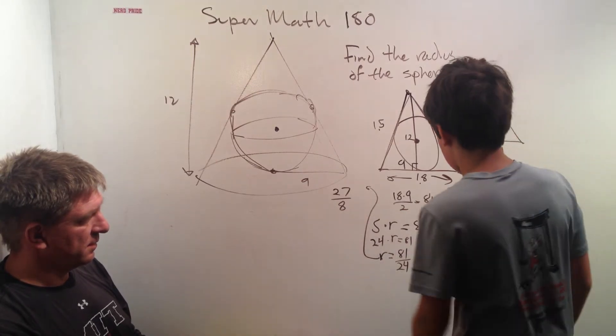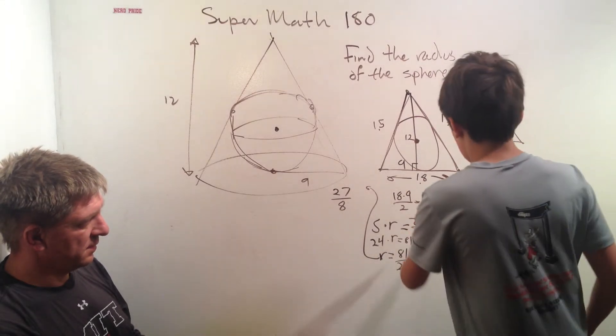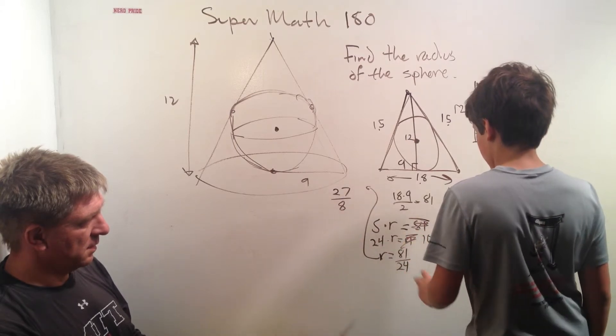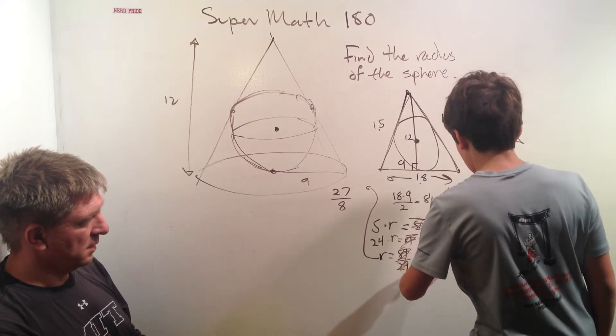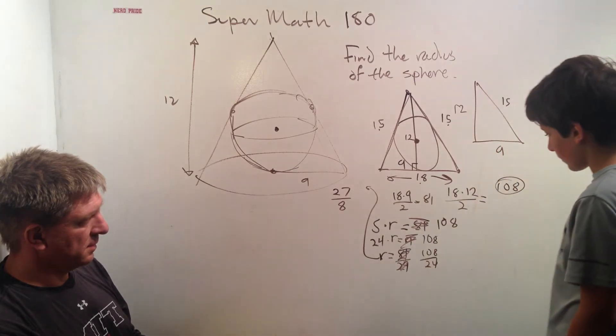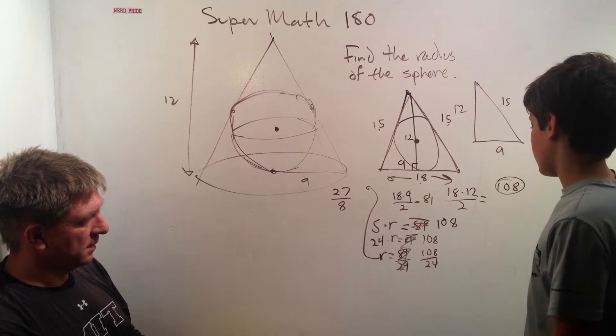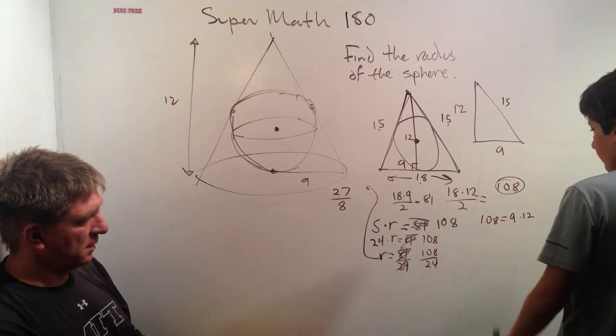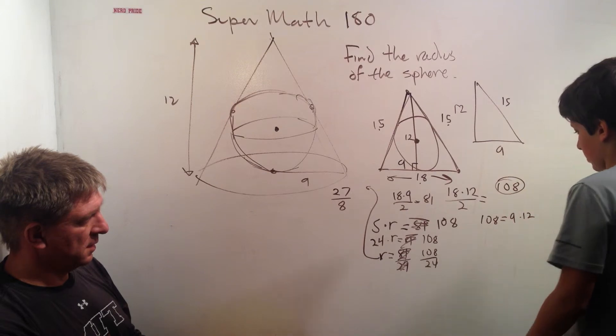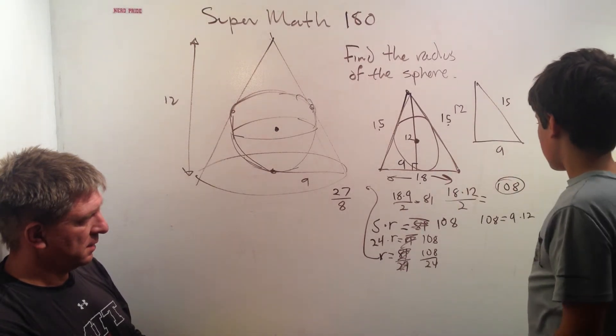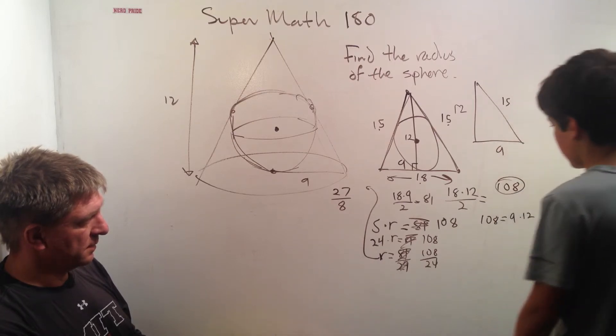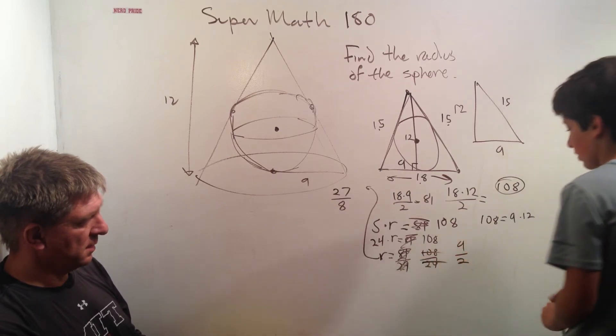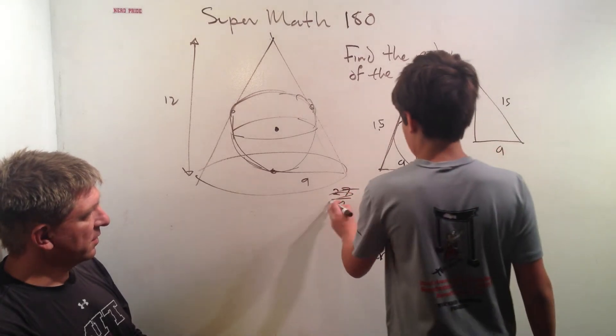So, now we can... S times R is 108. 24 times R is 108. You can take out a 12... Let's try a step... There you go. So the radius is 9 over 2.